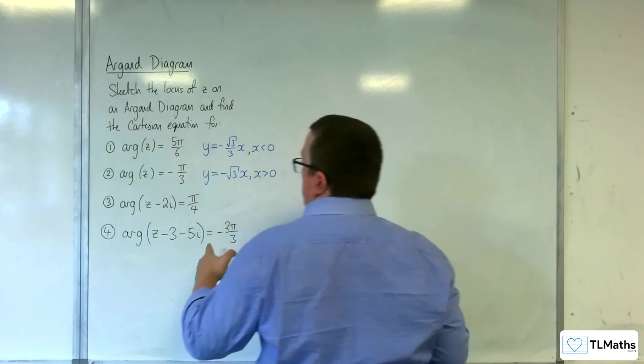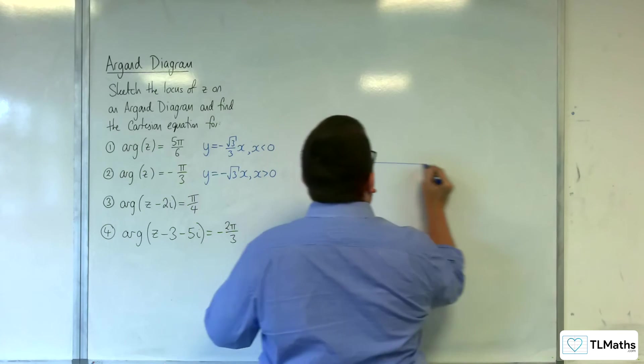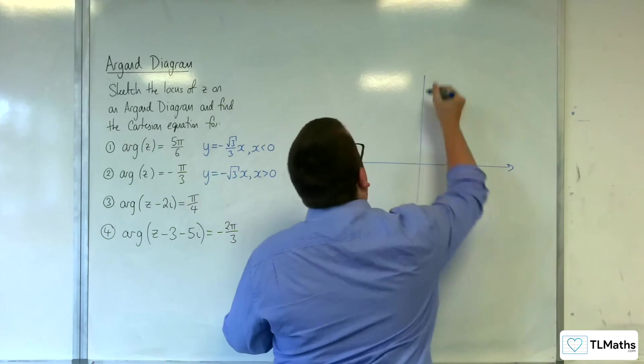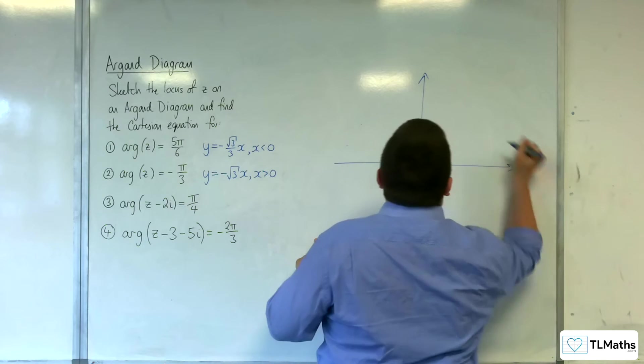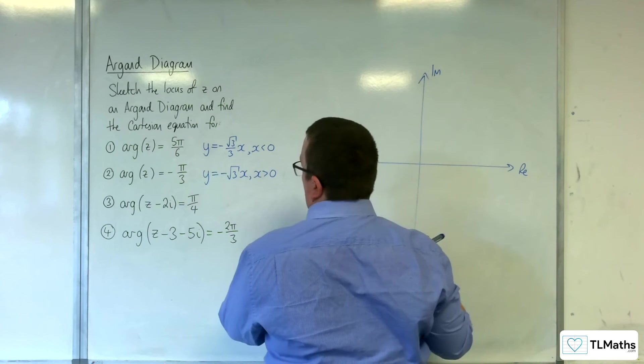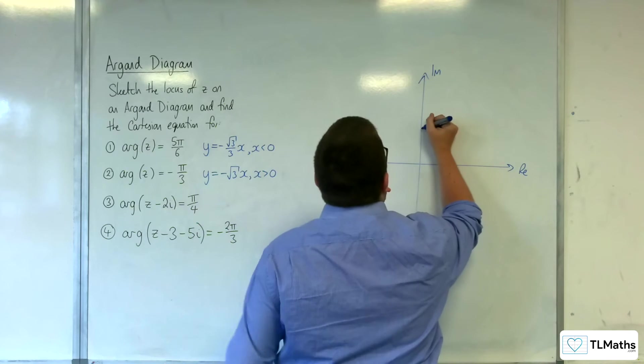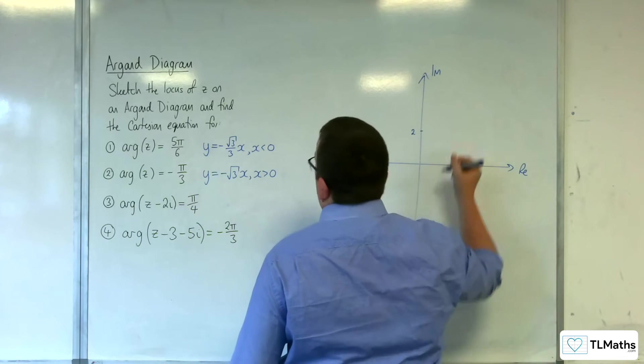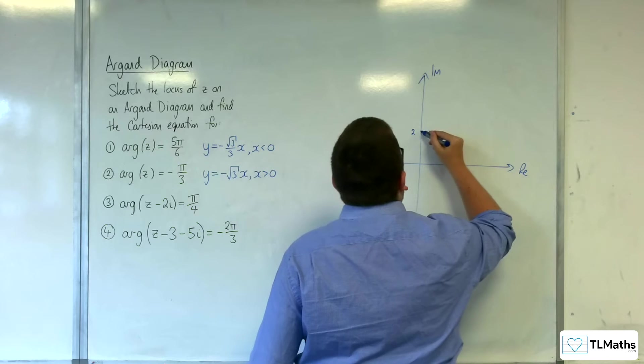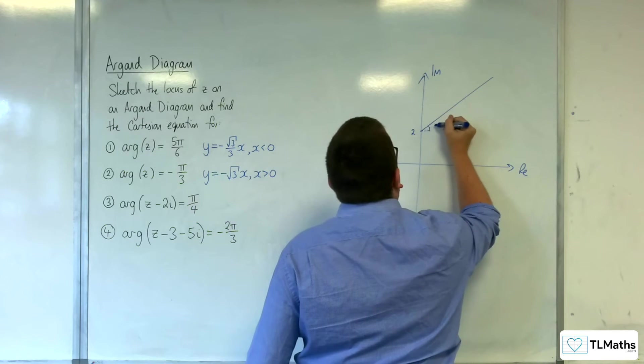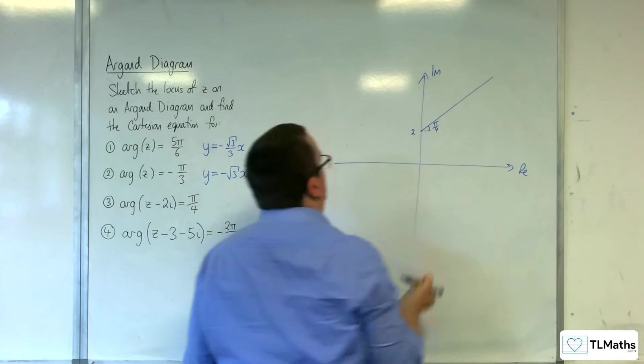Now, number 3. The argument of z take away 2i is equal to π over 4. Right, so that's my real axis. That's my imaginary axis. So, it's starting at 2i. So, 2 on the imaginary axis. The angle is π over 4. So, it's going to look something like this. Angle is π over 4.